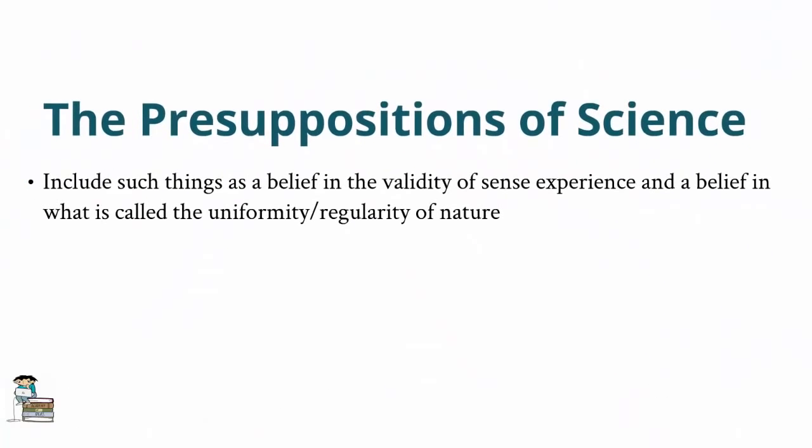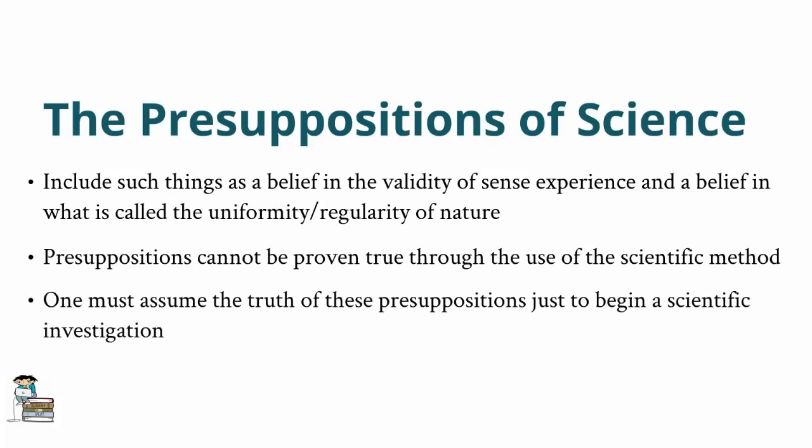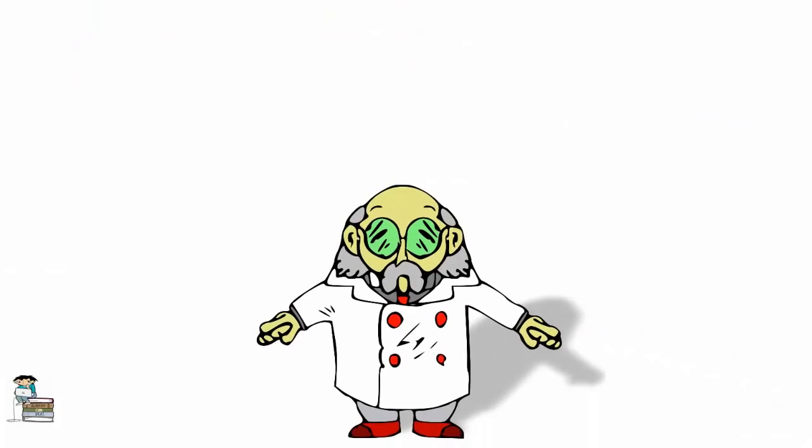Now the important point in relation to scientism is that these assumptions or presuppositions cannot be proven true through the use of the scientific method. Rather, one must assume the truth of these presuppositions, just to begin a scientific investigation. For example, if one denies the validity of sense experience, then how can one trust their observations of the results of an experiment? Or alternatively, if one denies that there is a regularity in the operation of the natural world, then how can a scientist ever hope to discover a law of nature?